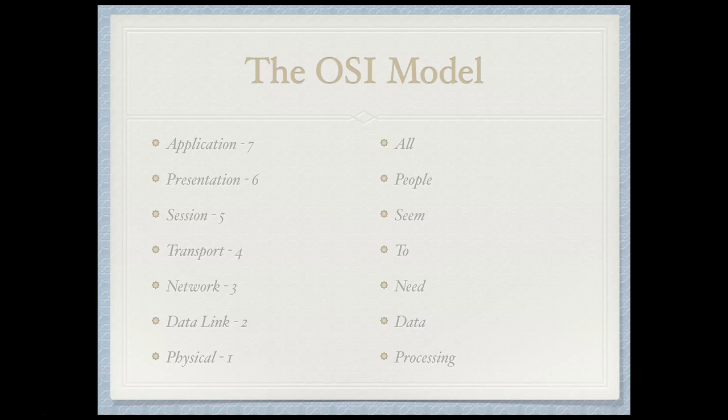So again, that's 'all people seem to need data processing.' One thing to remember here is that 'people' relates to presentation and 'processing' is physical. You'll notice that there are two layers that start with the letter P. The physical is always going to be layer 1 — it's the layer at the very end of the phrase — whereas 'people' is the one that comes second, which is presentation. So that's layer 7 going down to layer 1.